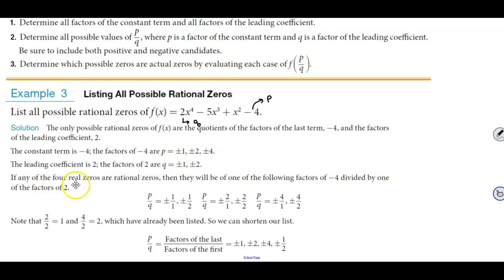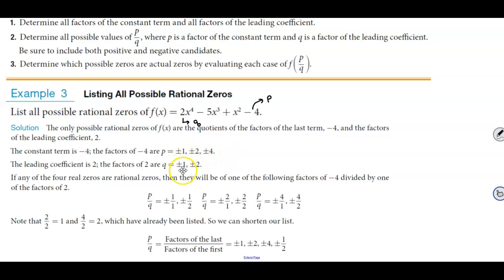Now, if any of the four real zeros are rational zeros, they will be one of the factors of negative 4 divided by one of the factors of 2. So the values of p over q are: plus or minus 1 divided by 1, plus or minus 1 divided by plus or minus 2, plus or minus 2 divided by plus or minus 1, plus or minus 2 divided by plus or minus 2, plus or minus 4 divided by plus or minus 1, and plus or minus 4 divided by plus or minus 2. Note that 1 divided by 1 equals 1, 2 divided by 2 equals 1, and 4 divided by 2 equals 2.